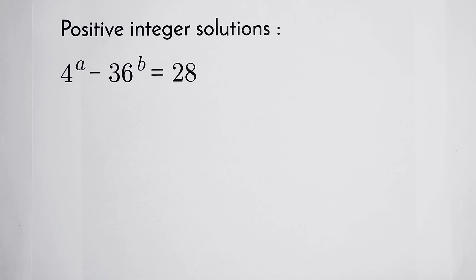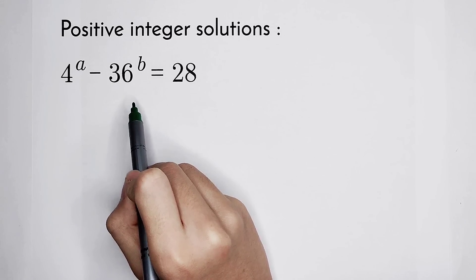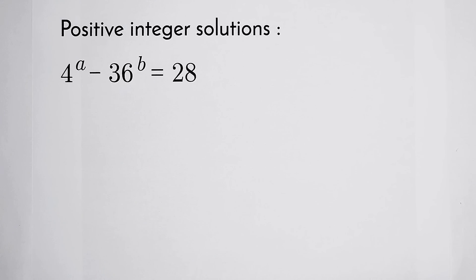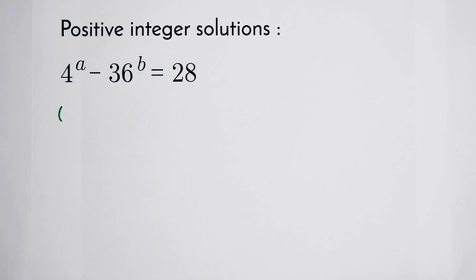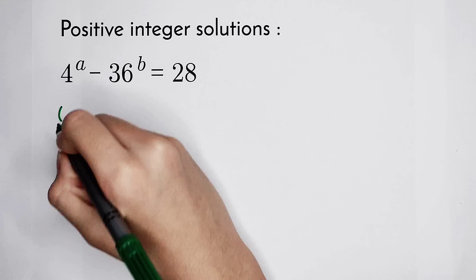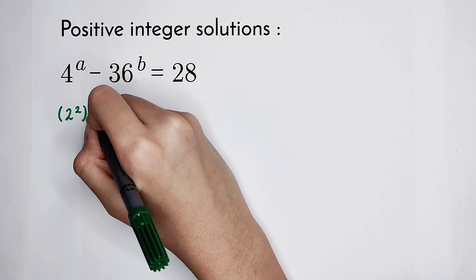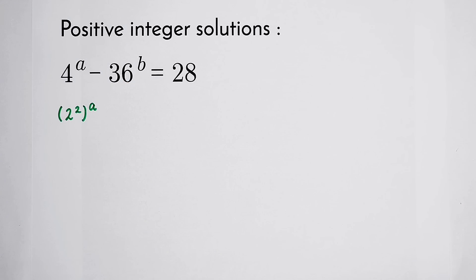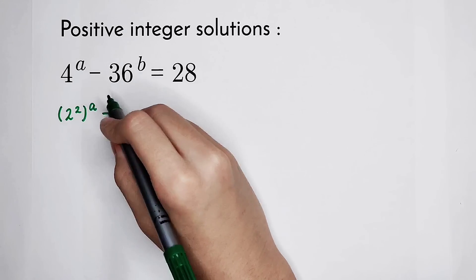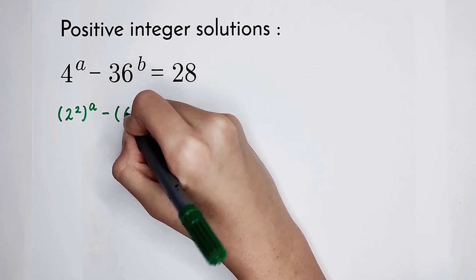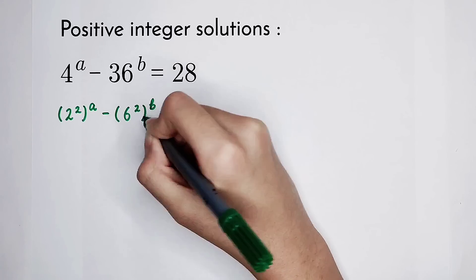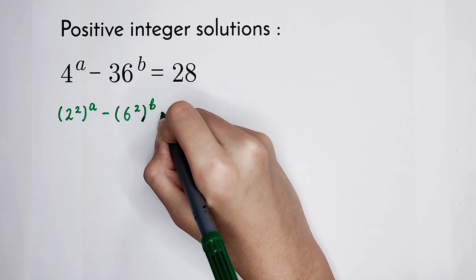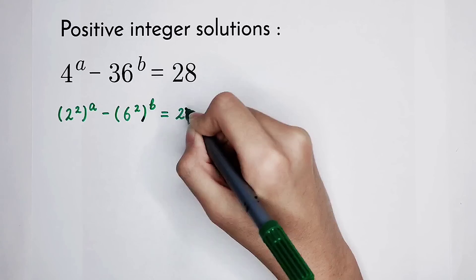If you have noticed that 4 is 2 squared and 36 is 6 squared, then it will be very easy for you. 4 is 2 squared, so the first step: write 4 as 2 to the power of 2 — don't forget the bracket. Minus 36 is 6 squared, so it is 6 to the power of 2, all to the power of b, equals 28.